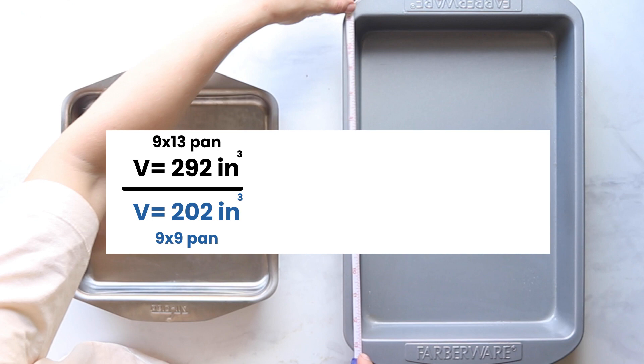divide that out to get 1.45, multiply it by 100% to put it in a percentage. So we get 145%, which means that we should probably do 1.5 times the original recipe.